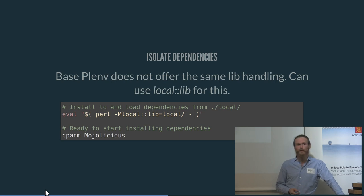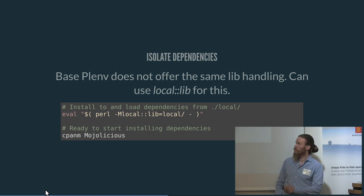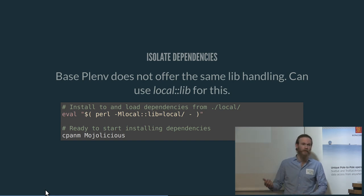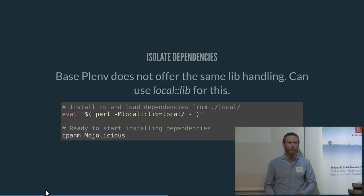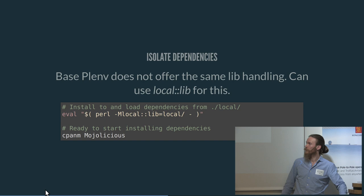PLenv is sort of a different story. It does have a plugin you can install to do the same thing as Perlbrew. I myself have never actually used that. I found it just as easy to have this run with a shell alias that I use whenever I'm going to work on a project and want that kind of isolation. And then it's just a matter of installing whatever you need.